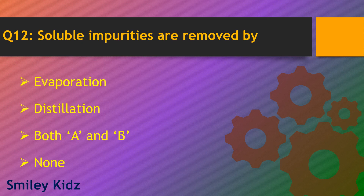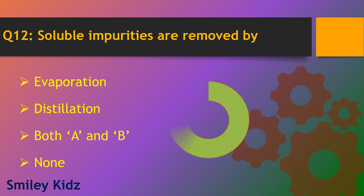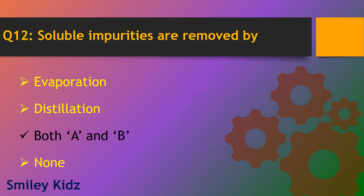Question number 12. Soluble impurities are removed by which method? Options are evaporation, distillation, both A and B and none. The right answer is both A and B. Soluble impurities are removed by both evaporation and distillation.